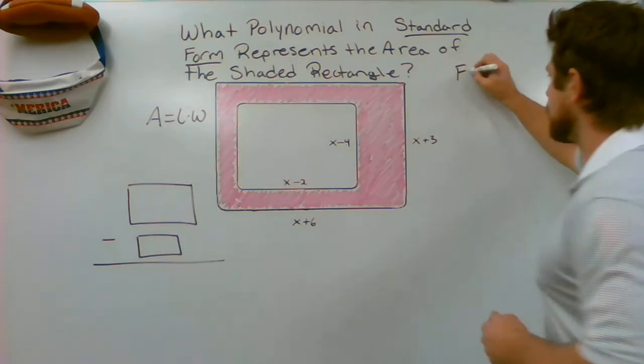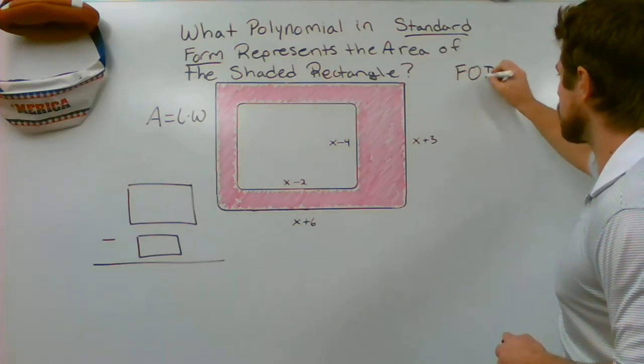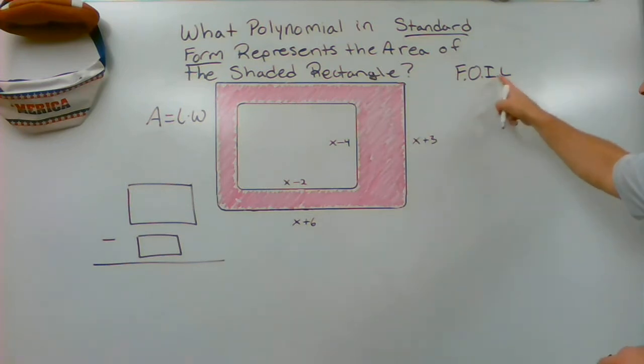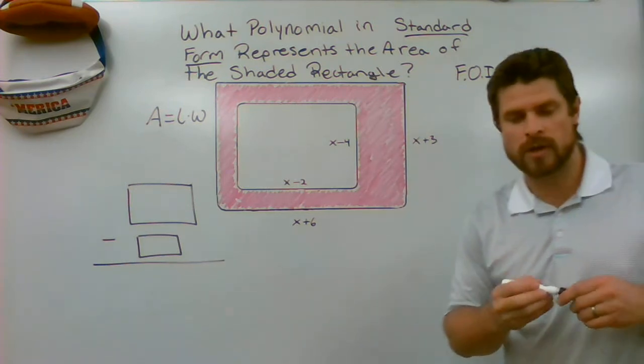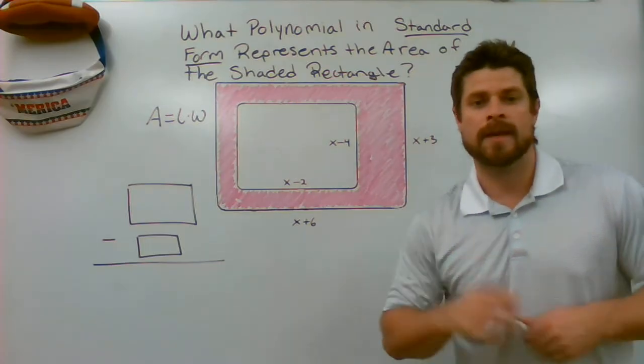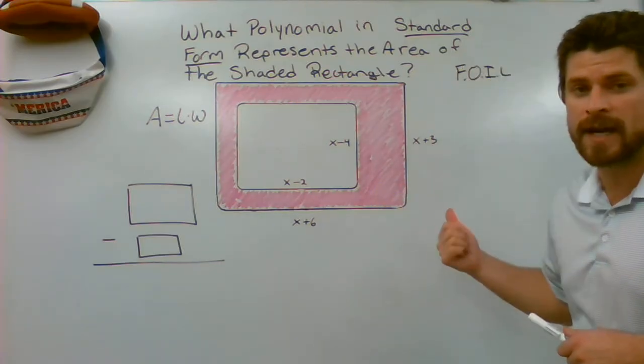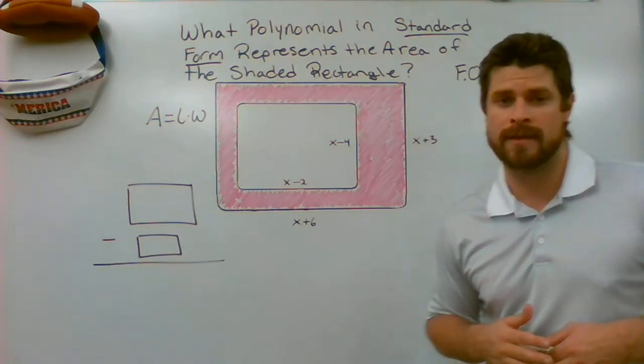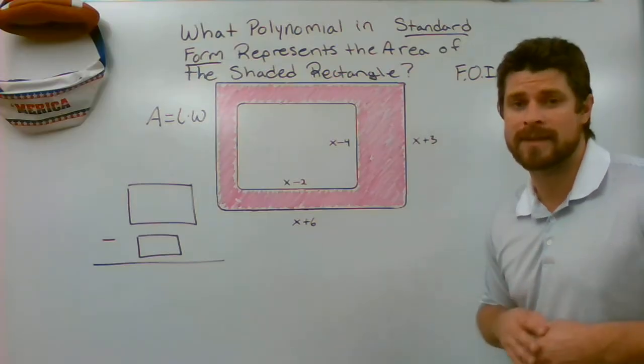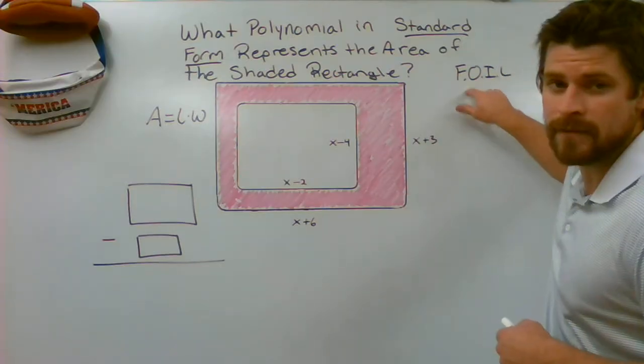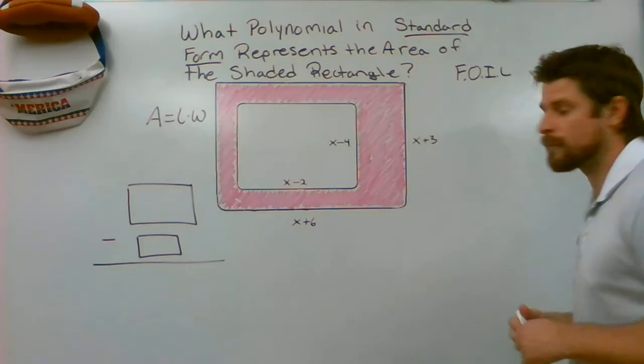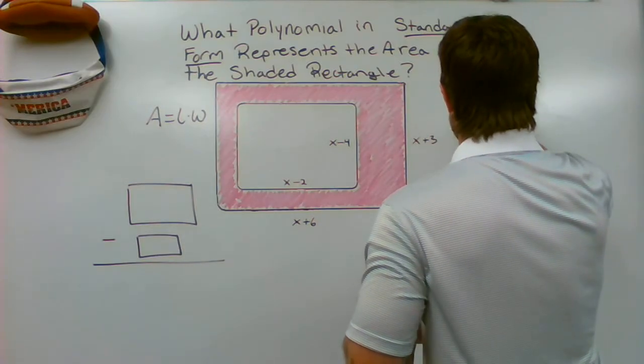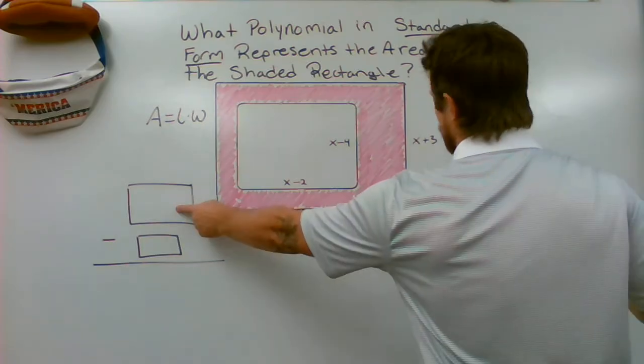One method that I like to use is the FOIL method. If you're not sure what FOIL stands for, it is first, outside, inside, last. That is the order in which you want to multiply two binomials together. If you're not sure of that technique or strategy, you can go back and watch one of my previous videos where I teach the FOIL method. I also have a couple of other videos where I show you some different methods if you're not a fan of this one. But I'm going to use the FOIL method for today. So what I'm going to say is X plus 6 times X plus 3. And what that is going to get me is the area of my large rectangle.